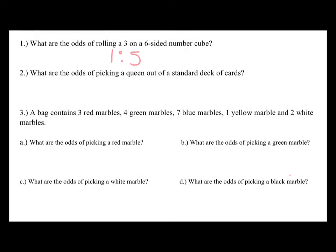What are the odds of picking a queen out of a standard deck of cards? Well, there are 4 queens, so that would be the favorable outcome. That means there are 48 cards that we wouldn't want that would be unfavorable, the 52 minus the 4 queens. Together, 48 plus 4 equals 52.